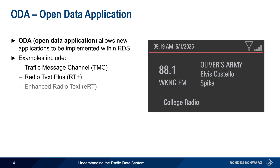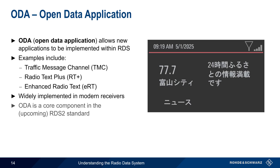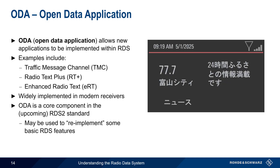A third example is Enhanced Radio Text, which enables the radio text to be sent using different alphabets and character sets. ODA is widely implemented on modern receivers, and is a core component in the upcoming RDS 2 standard. Not only will ODA allow new features in RDS 2, but there are plans to reimplement certain basic RDS features using ODA.